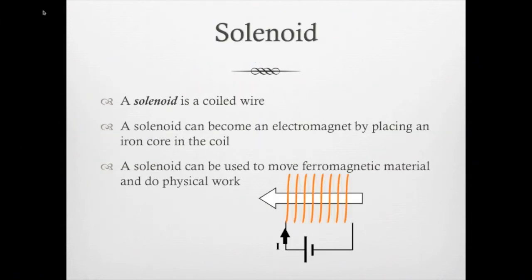When you have a coiled wire it's called a solenoid. A solenoid can be an electromagnet by placing an iron core inside the coils. So a solenoid can be used to move ferromagnetic material and also to do physical work.